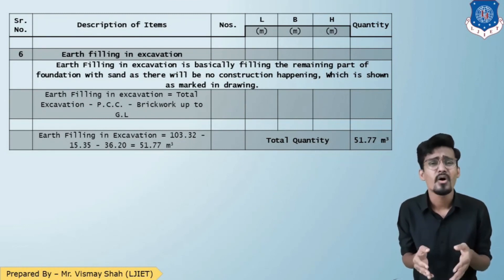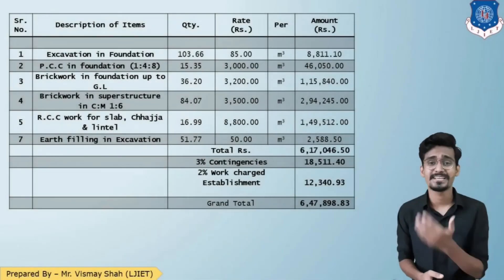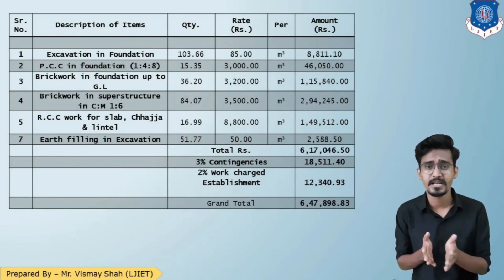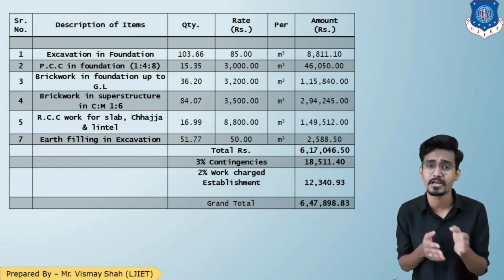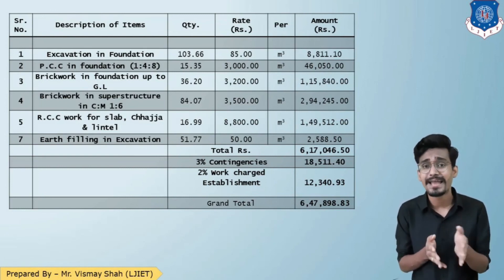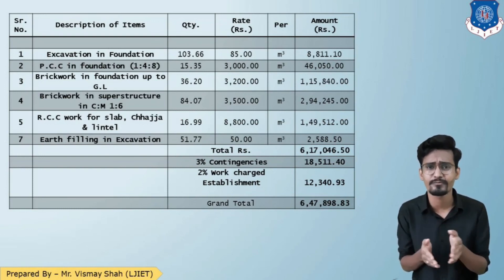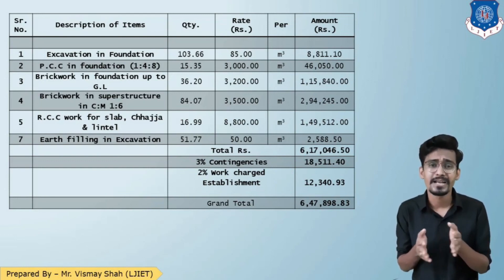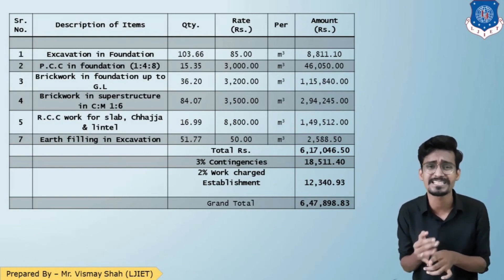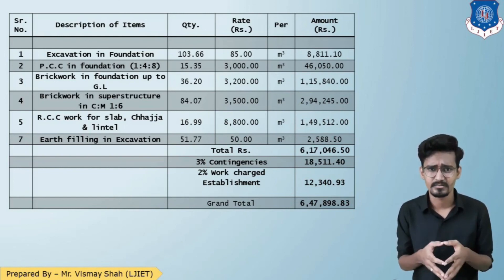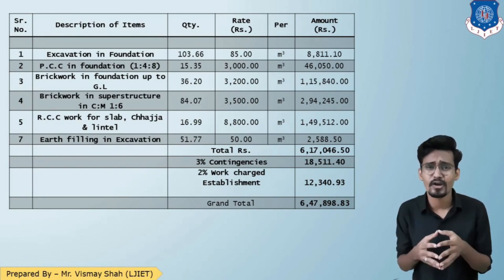Now let us prepare the abstract sheet. The abstract sheet columns are: item number, description of items, calculated quantity, unit, rate from SOR (Schedule of Rates), and amount (quantity × rate). The total cost is approximately six lakh seventeen thousand. To this, we add 3% contingencies and 2% work charge establishment, giving a final total of approximately six lakh forty-seven thousand, which can be rounded off to six lakh fifty thousand.